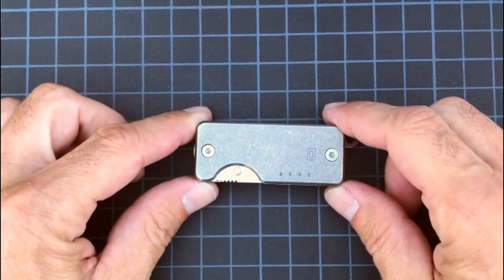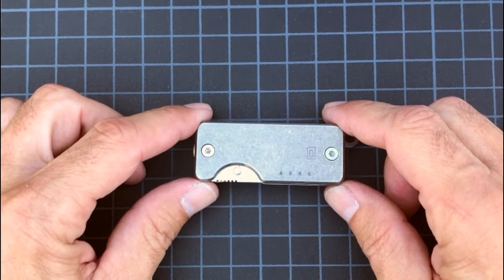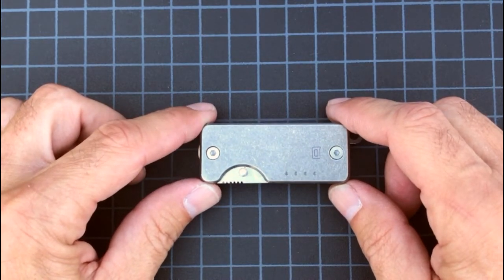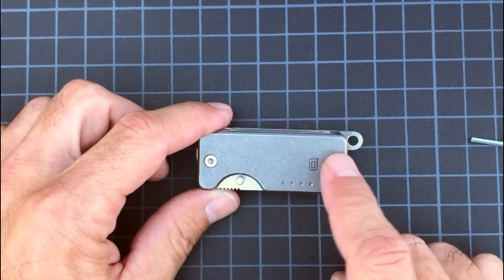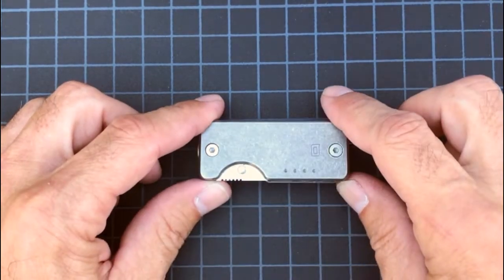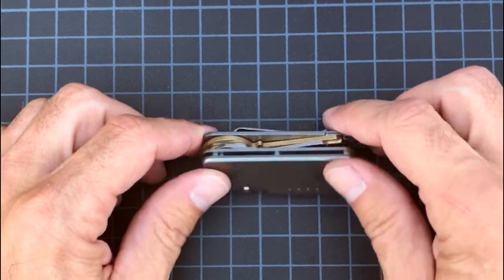That's how you install your keys on the Shorty. It's a similar application when you're using the Q2. Same process, the only difference is you're allowed to put the keys on both sides on the Q2. Any questions, feel free to give us an email. Thank you.